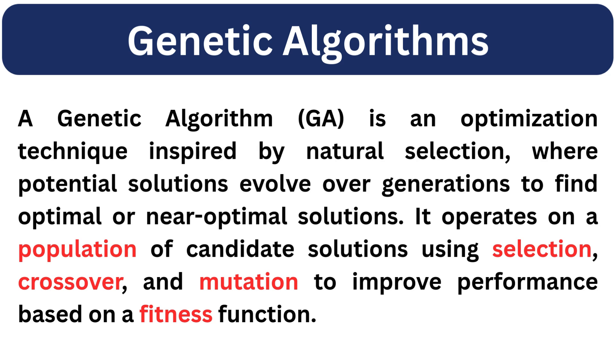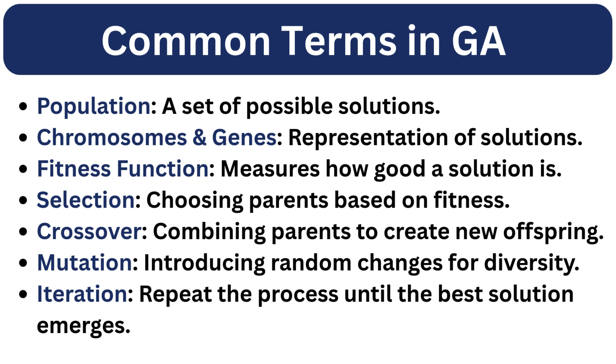Before we get into the GA steps, let's quickly go over some key terms. Population is a set of randomly generated initial candidate solutions. A potential solution is represented in a coded format, often as strings of binary values. These representations of solutions are called chromosomes. A part of the chromosome that represents one character of a solution is called a gene.